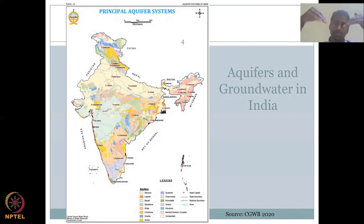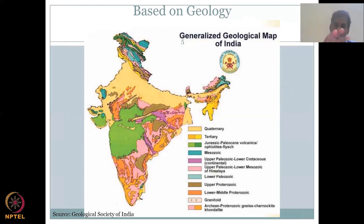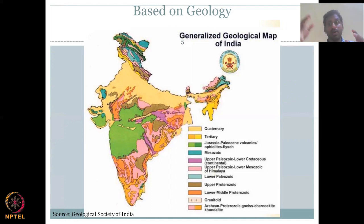Based on Geological Survey of India maps, a generalized geological map shows that quaternary formations — much younger geology — are sediment-driven alluvium and colluvium deposits found along the big river valleys. Central India is characterized by Jurassic and volcanic rocks, and rocks from the Himalayan regions are also not that much weathered into porous sediments — they are still hard rock.